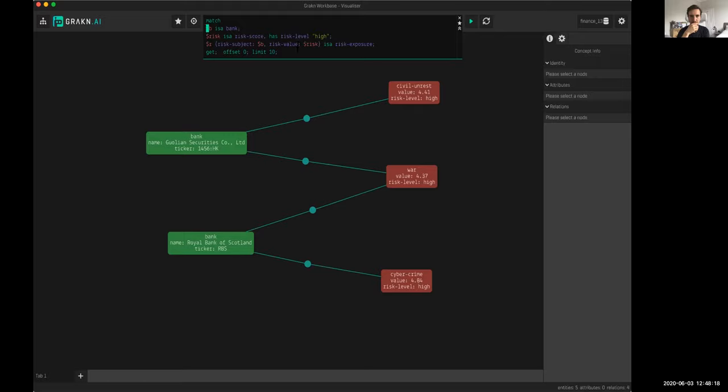The underlying data set contains data from risk exposure between organizations in the financial domain. There are ownership structures, exposures, different assets that are owned by different entities. The question we're trying to ask at a high level—what the business wants to know—is give me any bank that's exposed to a high-risk score.